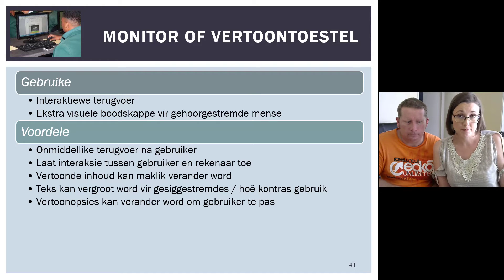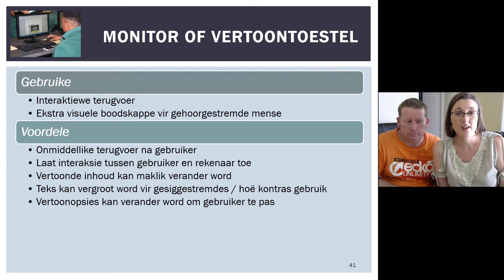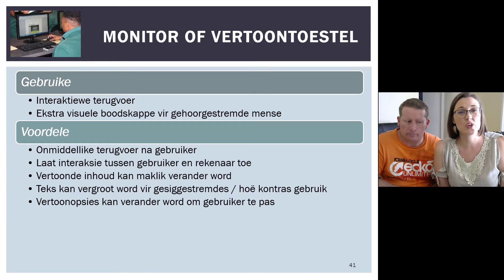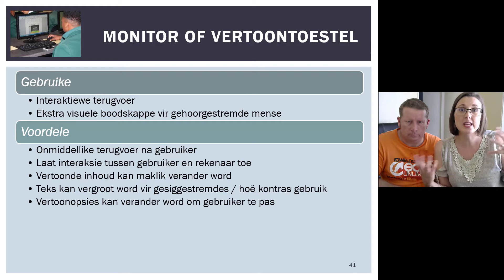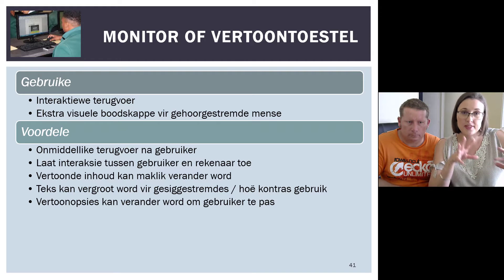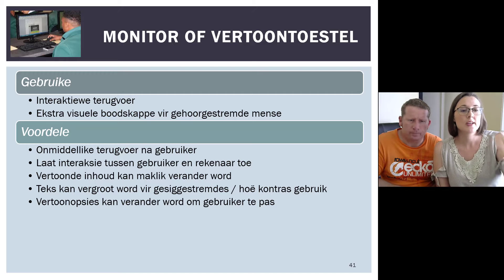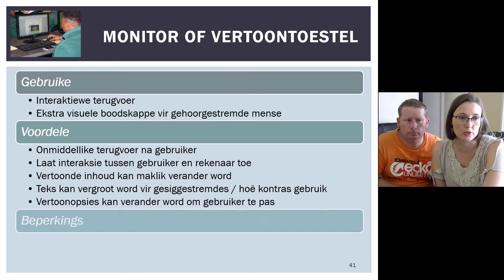Voor mense wat swak sien — my pa is byvoorbeeld een van hulle. My pa se sig is verskrikklik sleg; hy was op die ouderdom van 16 blind geklassifiseer, en toe kry hy 'n cornea oorplanting. So hy kan sien vandag, maar sy oë is baie swak. So sy tekst word altyd baie groter gestel op rekenaars, en ek help hom baie keer om 'n hoë kontraas-tema te gebruik op sy rekenaar — dit lyk amper soos 'n negatiewe tema wat jy op jou selfoon kan opstel, sodat die mens makliker kan lees. So jy kan die vertoon-opsies gebruik om dit na jou smaak te verander.